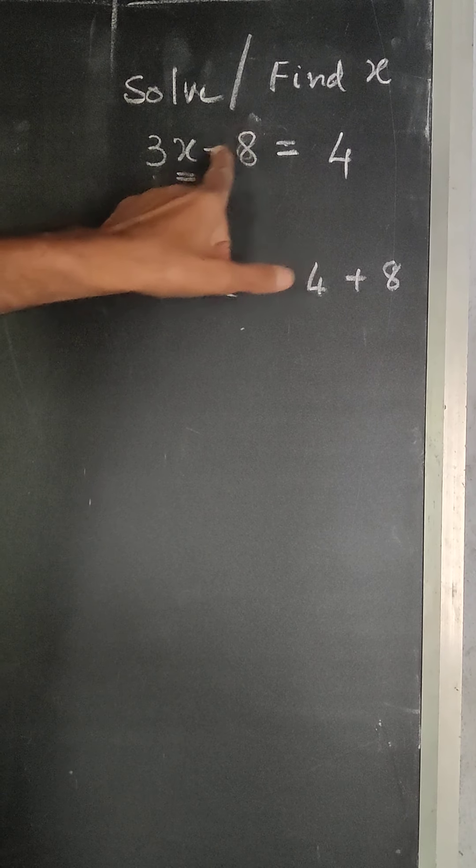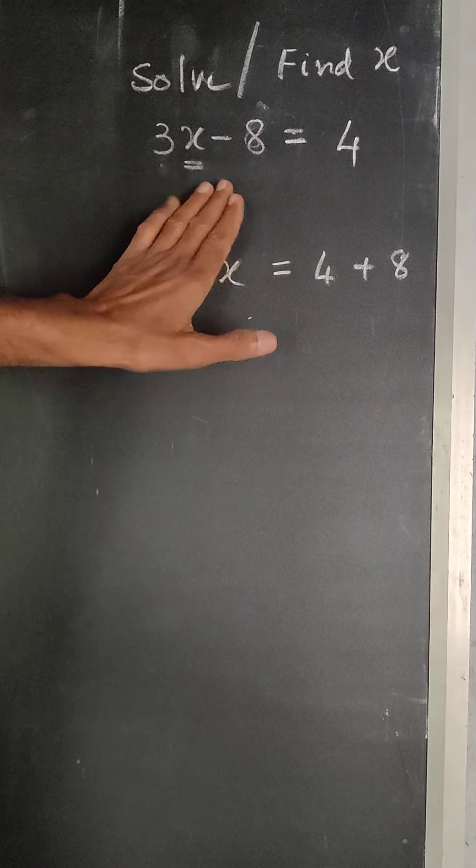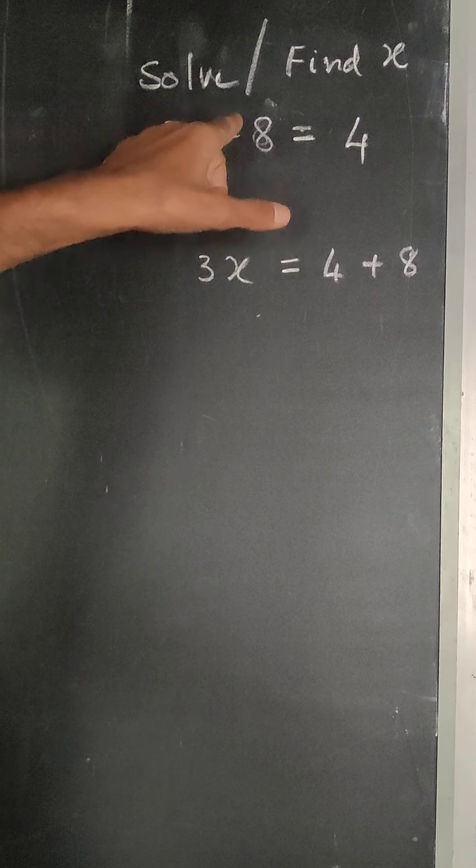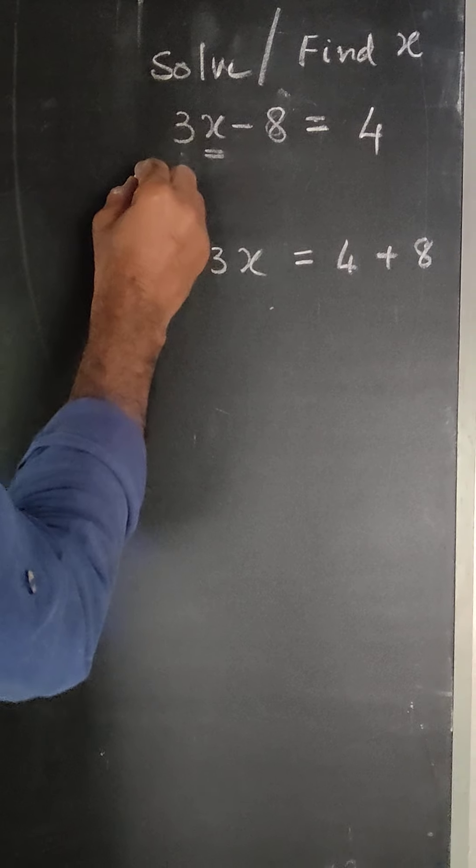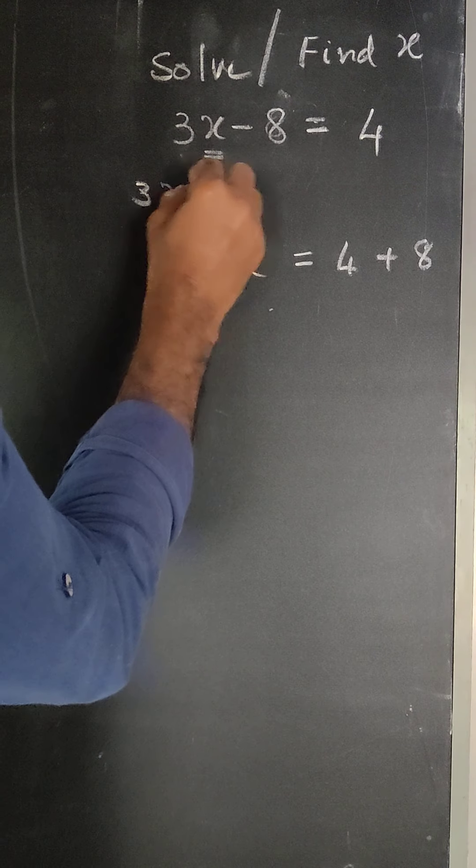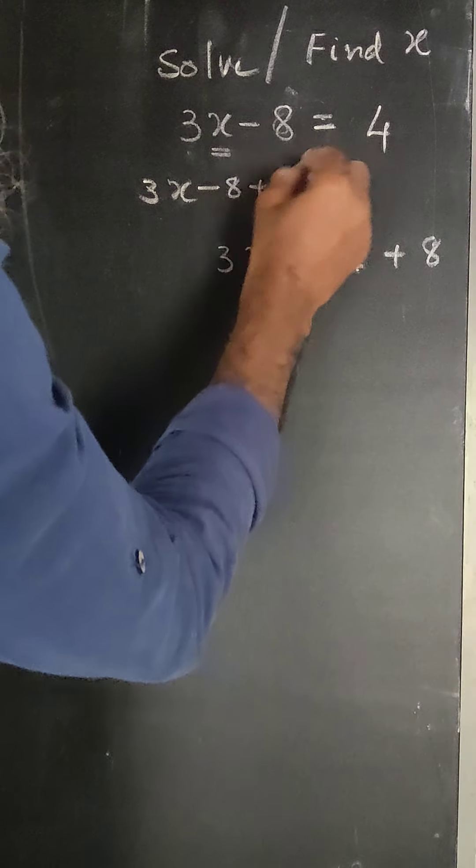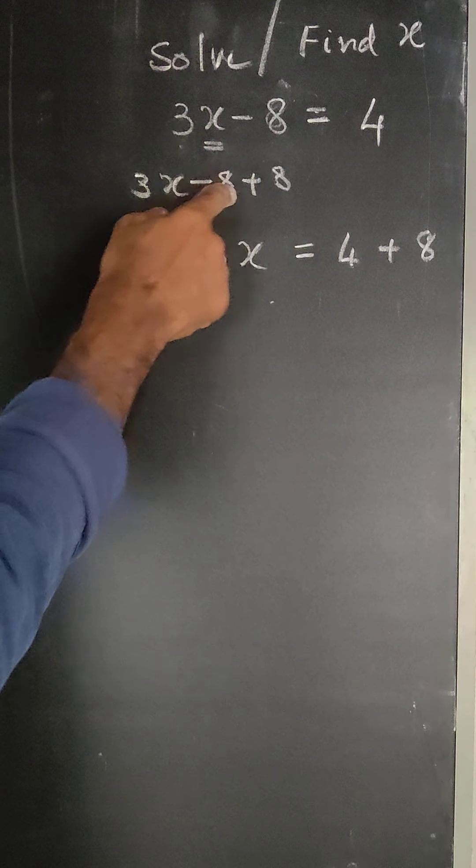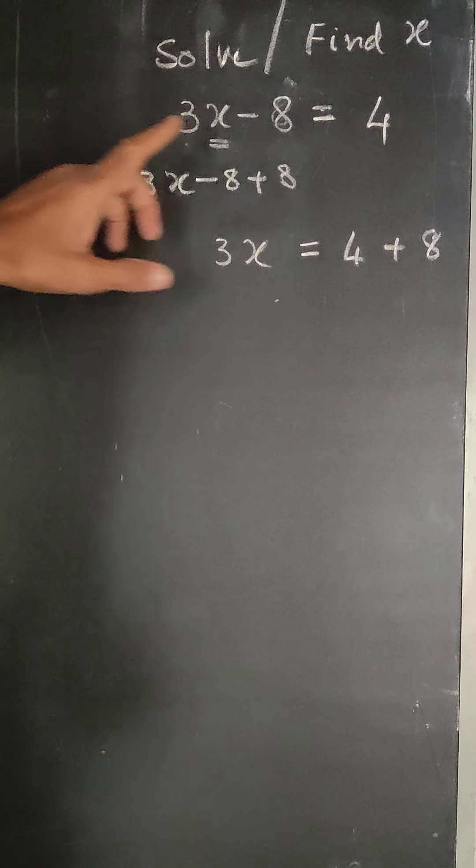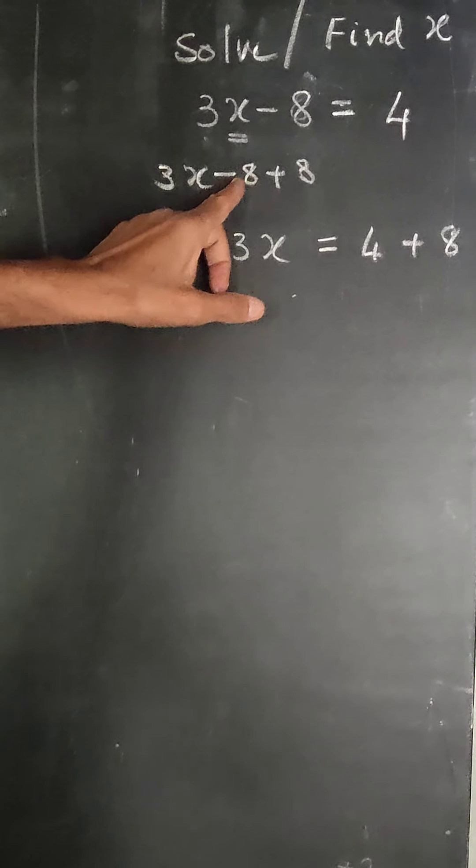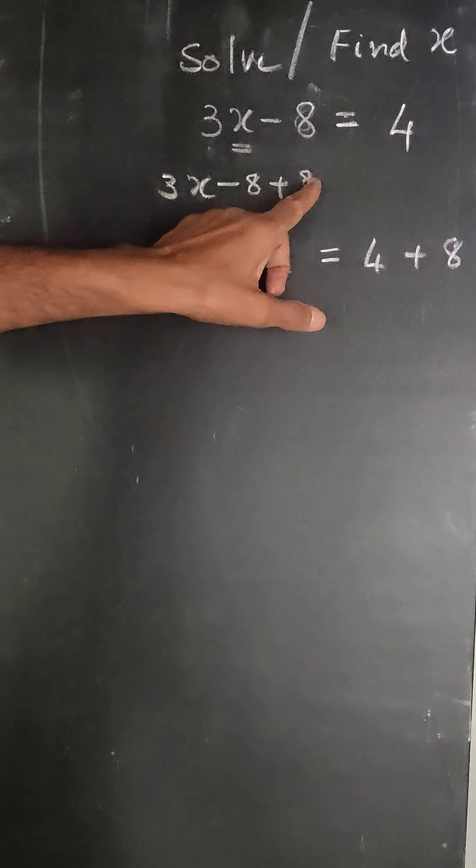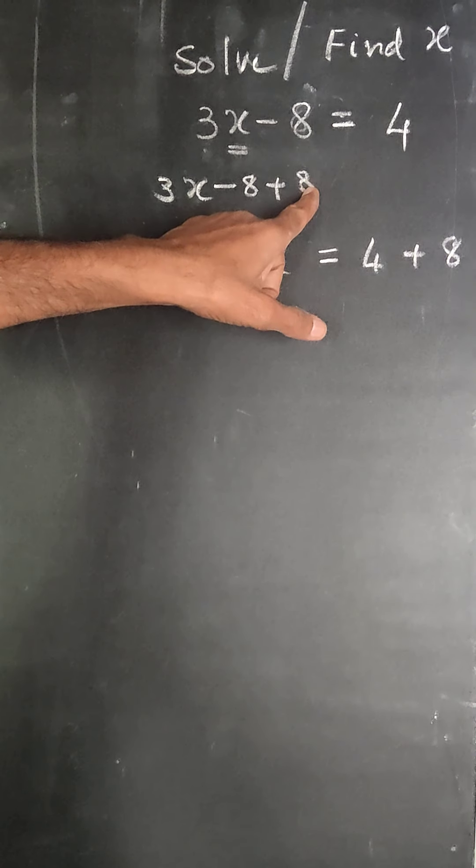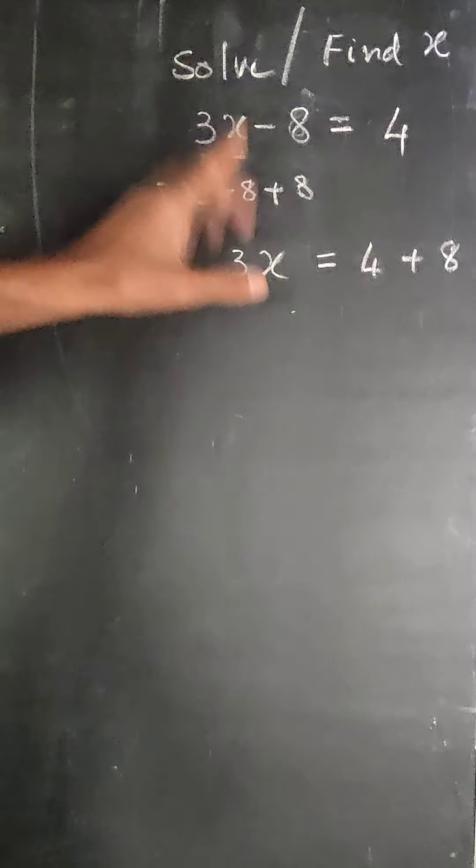So 3x minus 8, if we add 8 to both sides, minus 8 plus 8. By the additive inverse property, minus 8 is additive inverse of plus 8, and they add to 0.